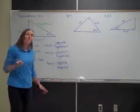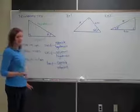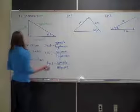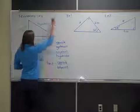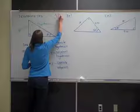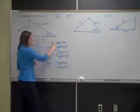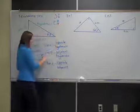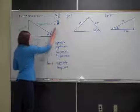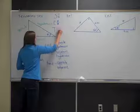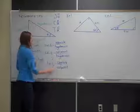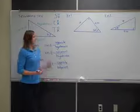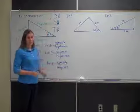Those are the three trig ratios. You've probably heard the mnemonic device to help you remember them — SOHCAHTOA. SOH stands for sine: opposite over hypotenuse. CAH stands for cosine: adjacent over hypotenuse. And TOA stands for tangent: opposite over adjacent. So SOHCAHTOA helps you remember which trig ratio goes with which sides.